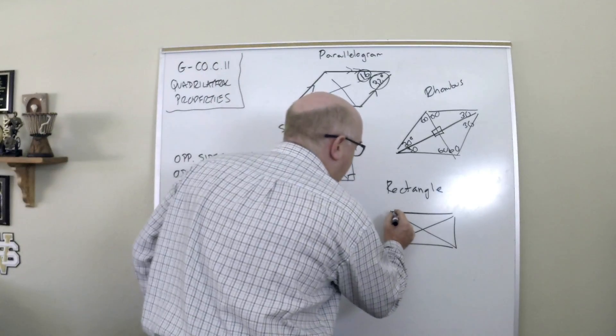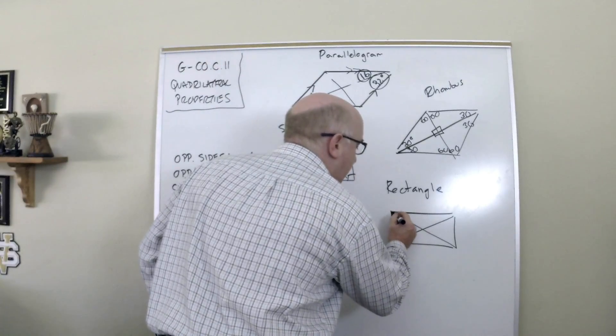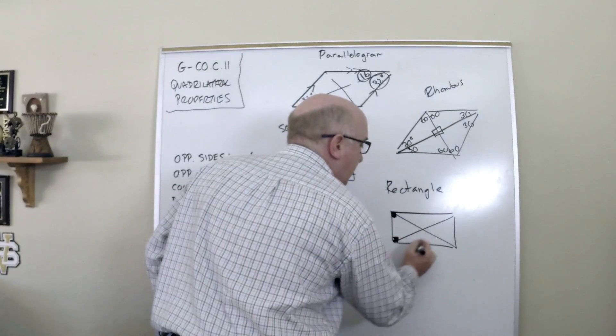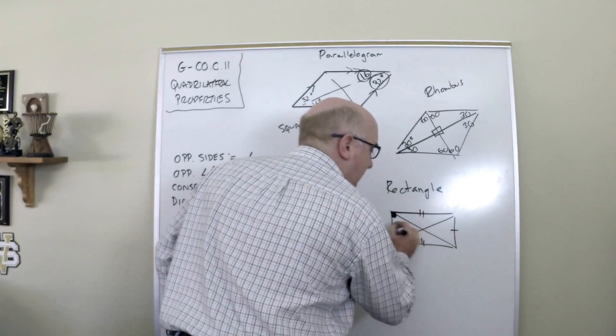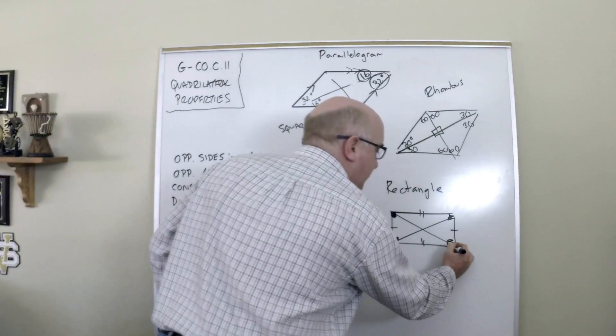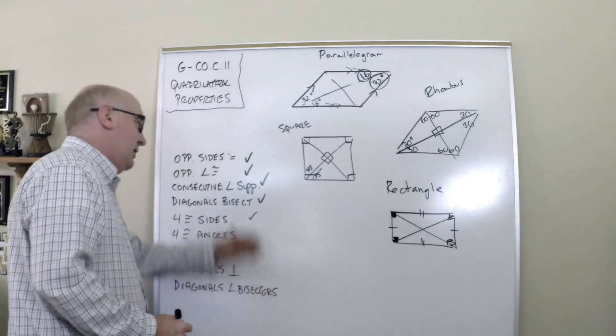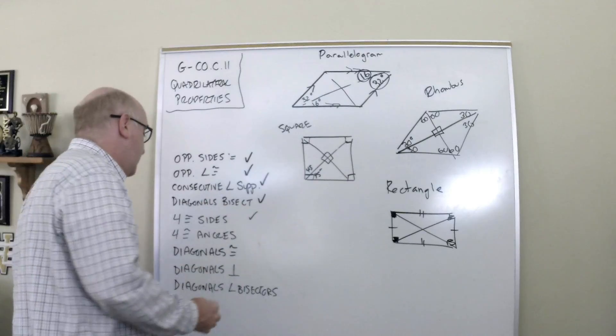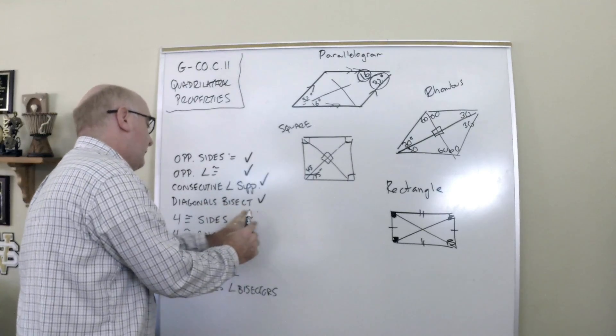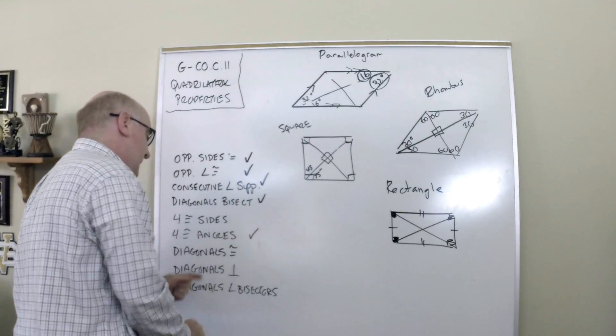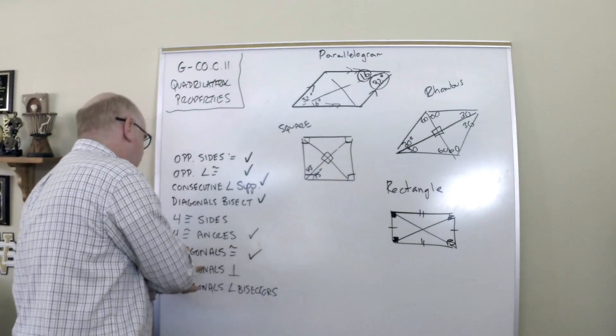Same thing can happen with a rectangle. We know business about the four right angles, we know opposite sides are equal, we know a lot of those things. Again if I was working with a rectangle, I know it has the parallelogram properties but it would also have four equal angles and it would have diagonals that are congruent.